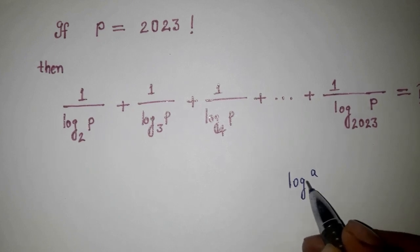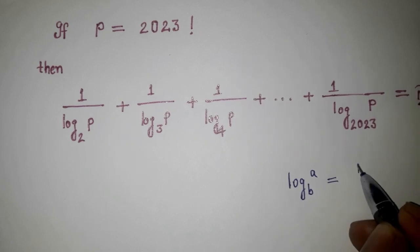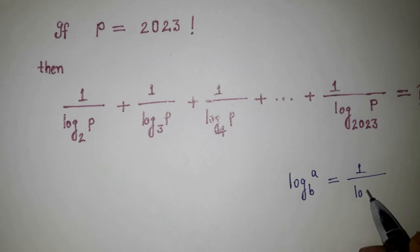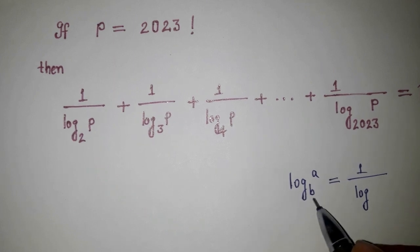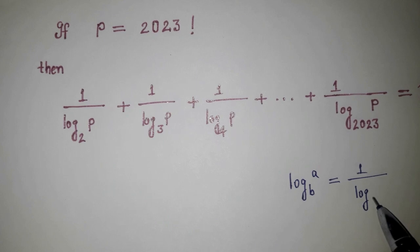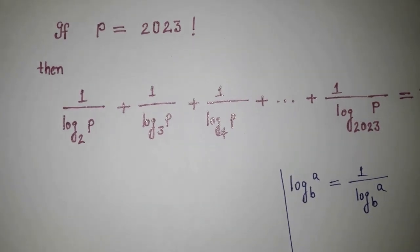Here, log base b of a can be written as 1 upon log base a of b. Both will interchange to each other. So I'm just swapping it: b is here and a is here. So this is a formula I'm going to use over here.